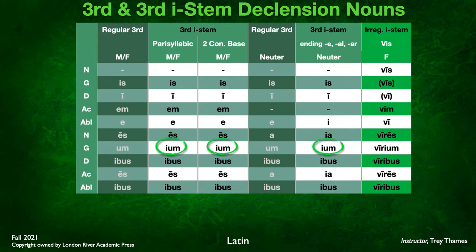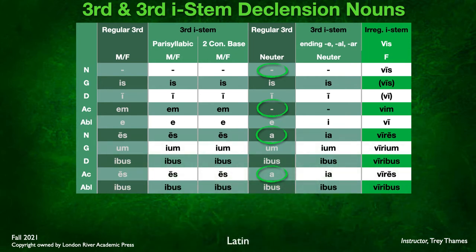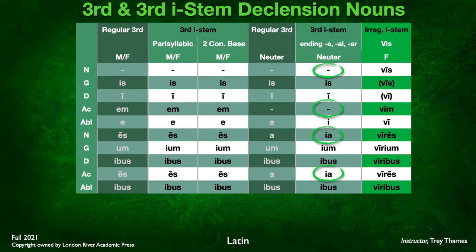For neuter, there's not much difference either. You're still used to having an A in the nominative and accusative plural, and the nominative singular matches the accusative singular. We're already seeing UM turn into IUM in the genitive plural. The one remaining variation is that the A in the nominative and accusative plural adds an I, becoming IA and IA — that's why we call it the I-stem.